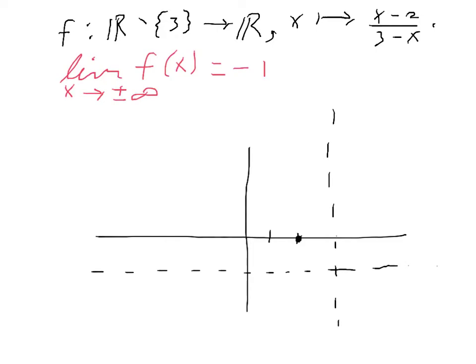Now, what can you say about the sign of this function? If x is bigger than 3, then this is positive, this is negative, so the function is negative if x is bigger than 3, and therefore it must be doing this.